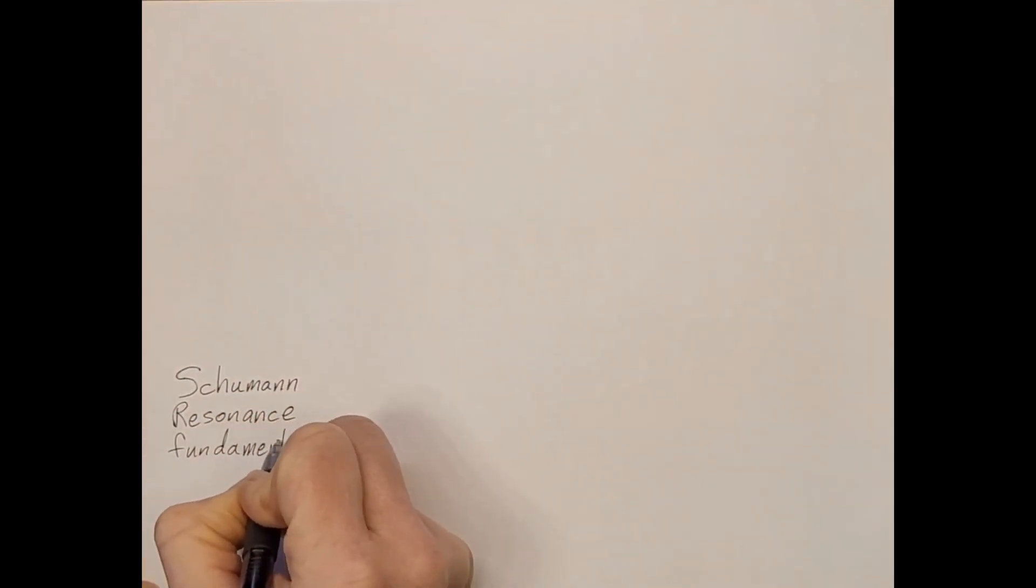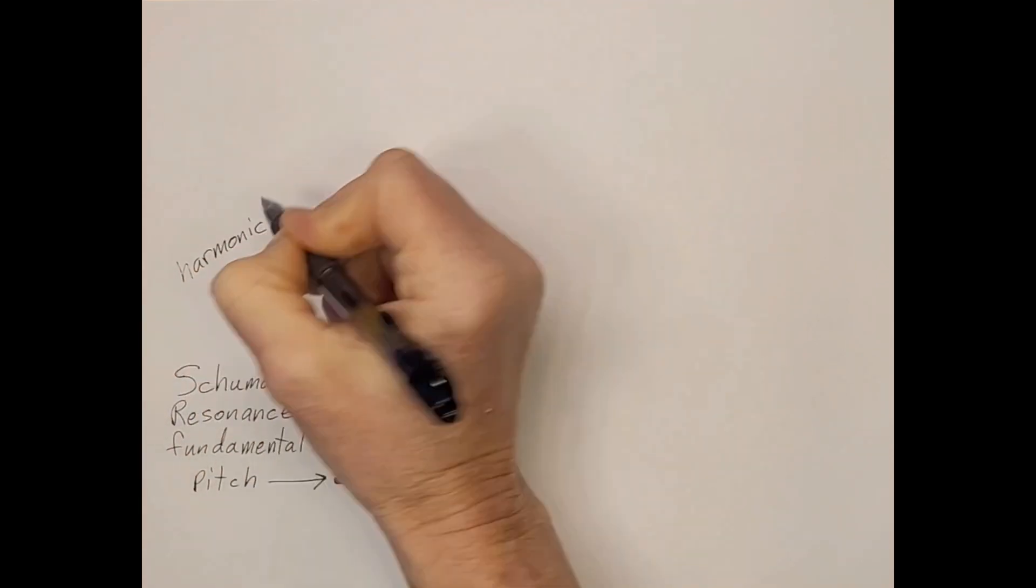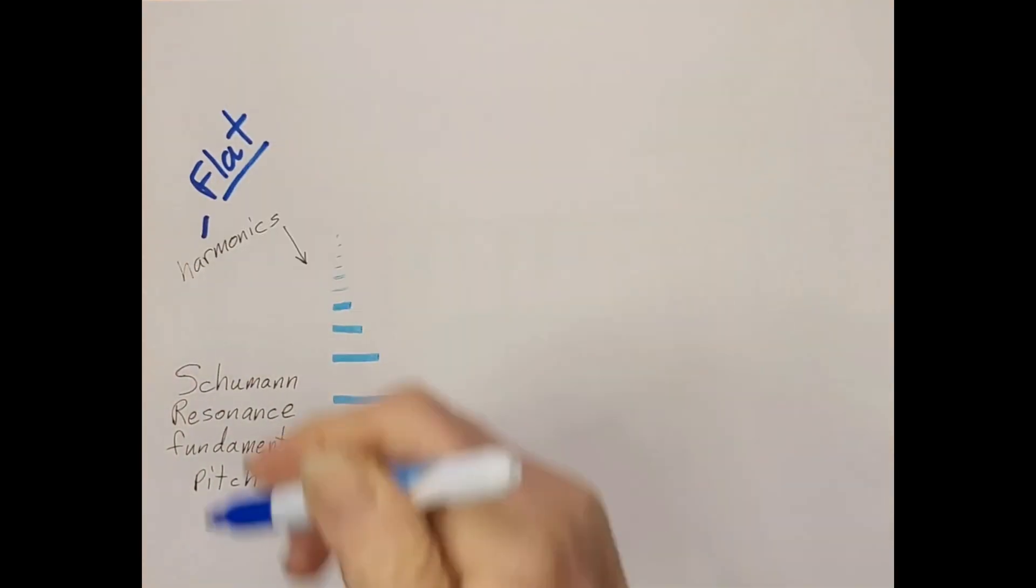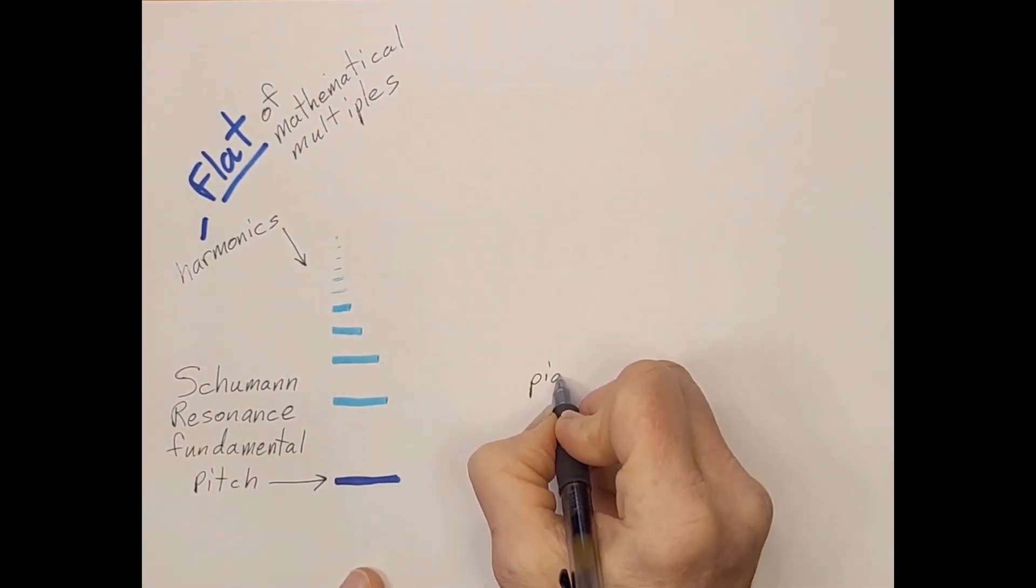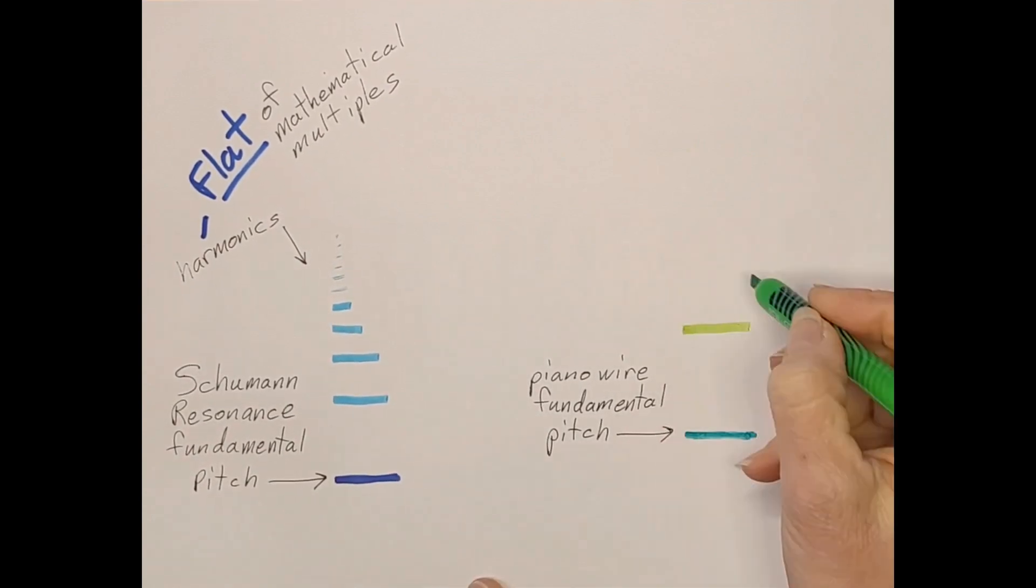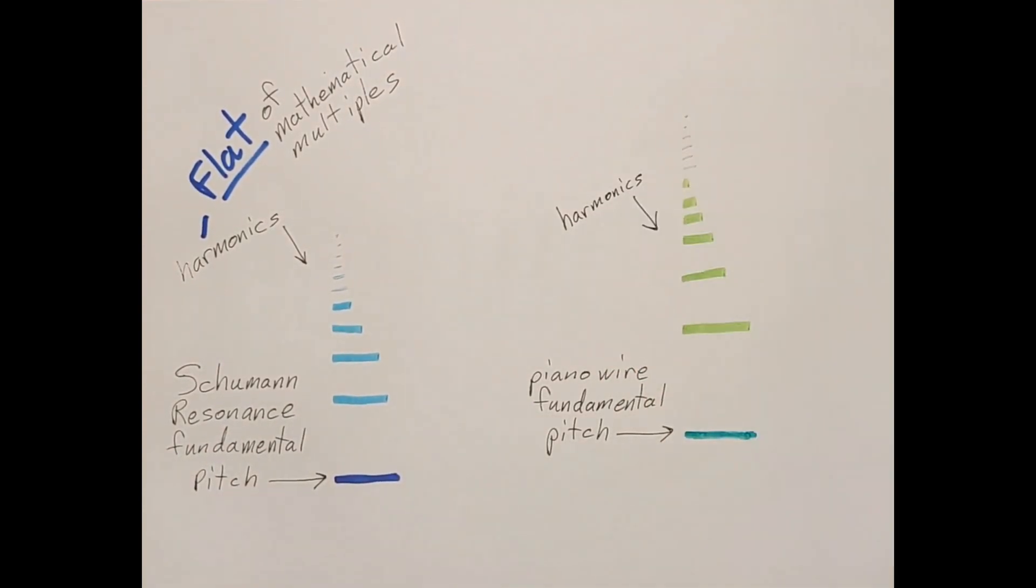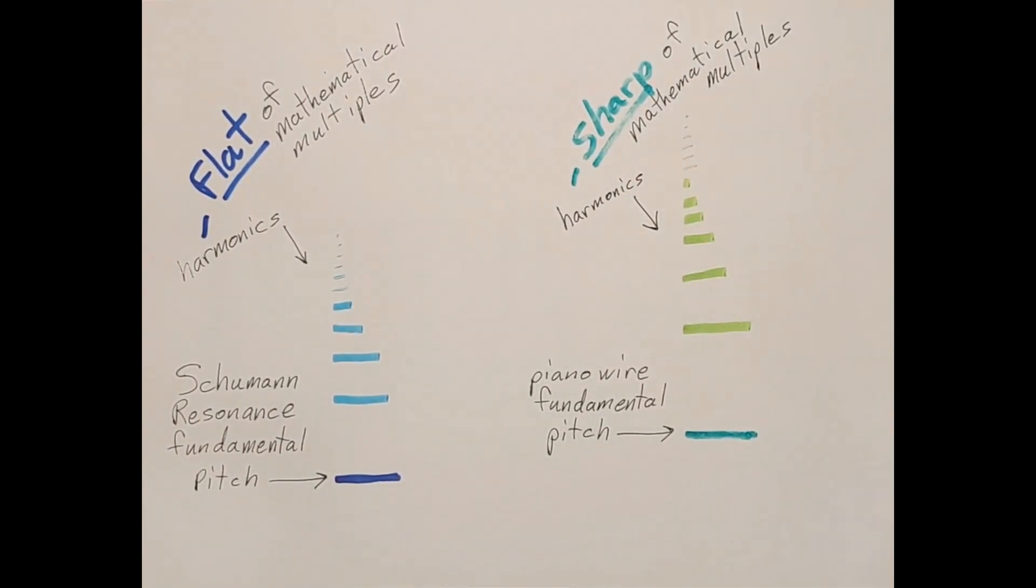Regarding the Schumann resonance, it has its own harmonics and its own inharmonicity. Except the harmonic series of the Schumann resonance goes flat, the exact opposite of a piano wire. So when we multiply the frequencies up from a root number of the Schumann resonance, we aren't even doing that properly because we are using exact multiples which the Schumann resonance doesn't follow.